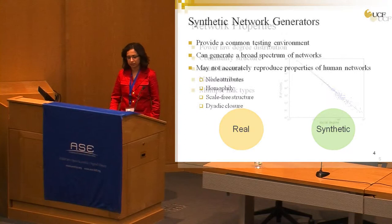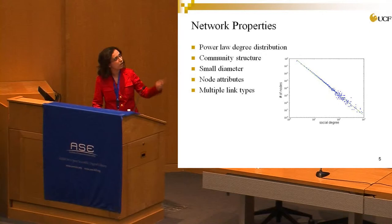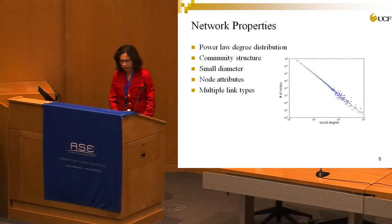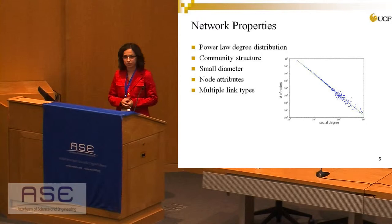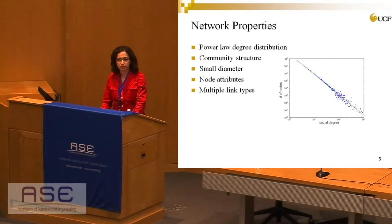Several properties that appear in real graphs include the power law degree distribution, where more nodes have higher degree than in other kinds of distributions. Another property is having a community structure in addition to a small diameter — with network growth, the diameter in real networks actually shrinks in size. Other properties that available synthetic generators have not addressed include node attributes and different types of relationships between nodes.